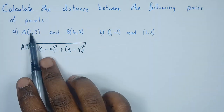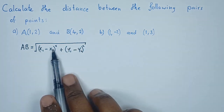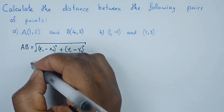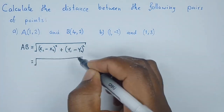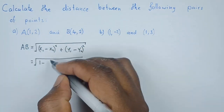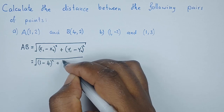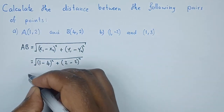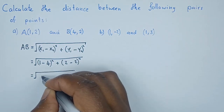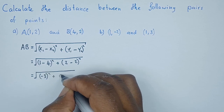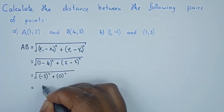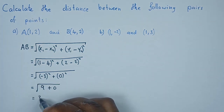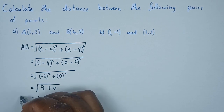Where x1 is the first x coordinate, x2 is the second x coordinate, and y1 is the first y coordinate, y2 is the second y coordinate. So this would be the square root of (1 minus 4) squared plus (2 minus 2) squared. This gives us negative 3 squared plus 0. Negative 3 squared is 9, and the square root of 9 is simply 3, so the distance is 3 units.